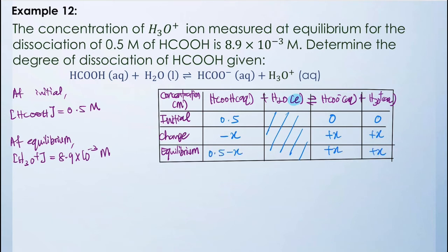At equilibrium, the concentration of H₃O⁺ equals 8.9 × 10⁻³ M. This means X equals 8.9 × 10⁻³.